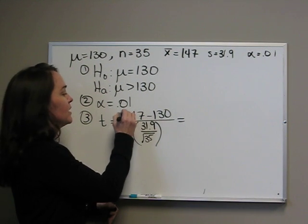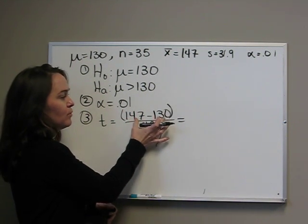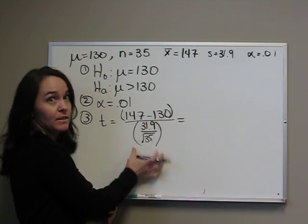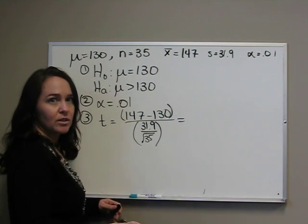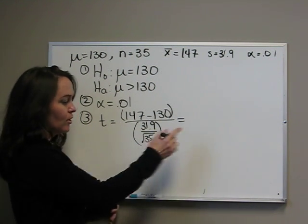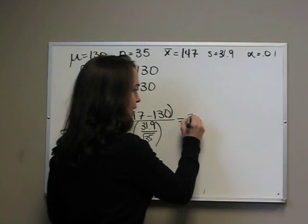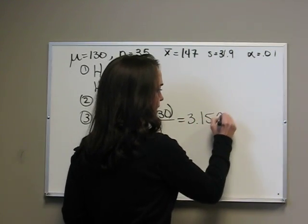If you're going to plug this all in your calculator, be sure you put this in parentheses, divided by all of this in parentheses. Otherwise, it's not going to give you the correct answer. To four decimal places, that would be 3.1528.